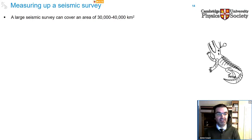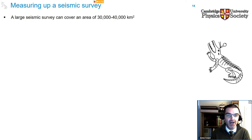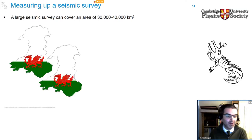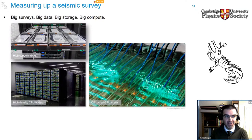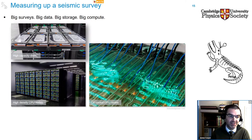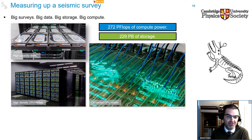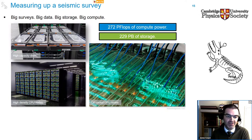A seismic survey consists of many seismic experiments — air gun firings — over a large area of ocean, which can be as large as 40,000 square kilometres: about twice the area of Wales, 1,000 times the area of Cambridge, or about 5 million football pitches. Surveys of that size generate an enormous amount of data, requiring significant compute resources to store and process. At CGG we have around 270 petaflops of compute power and about 230 petabytes — roughly 230,000 terabytes — of storage.